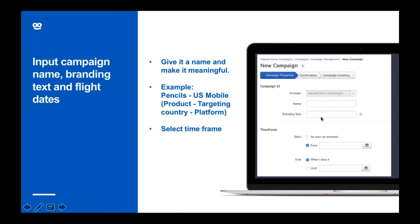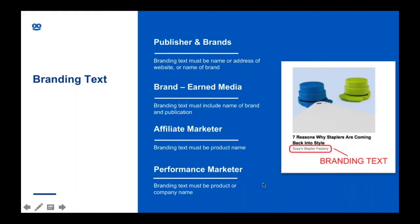You also need to add branding text, which is important to let the user know what they'll be landing on. There are a few different ways you can write this. If you're a publisher or a brand, this will be your company name or website. If you're promoting earned media, include the name of the publisher — for example, if you are Bank of America and Bloomberg writes an article about you, it would be 'Bank of America by Bloomberg.' If you're an affiliate marketer, use the name of the end product, and if you're a performance marketer, use your product or company name.